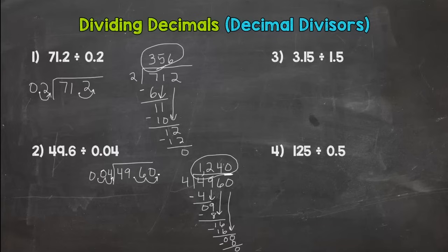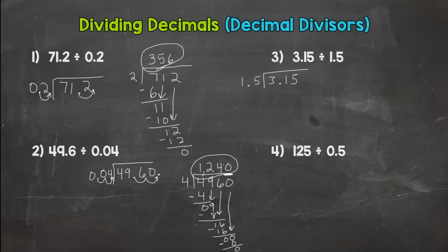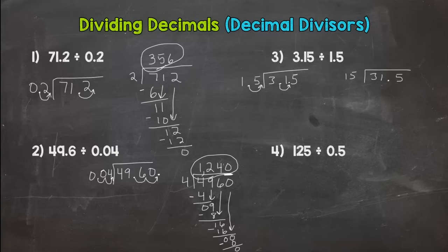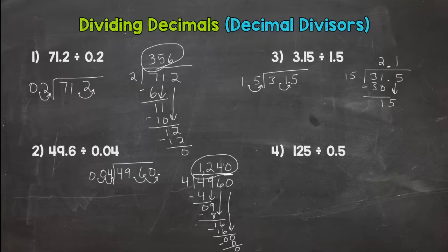Number three: we have 1 and five tenths as our divisor and 3 and fifteen hundredths as our dividend. Is our divisor whole? No — it's in between 1 and 2; it has a whole number part but it's not an exact whole number. So we need to multiply by a power of ten. We move the decimal once, which is like multiplying by ten. Do the same thing to the inside. Now my divisor is 15, and my decimal is in between the 1 and the 5. Is my divisor now whole? Yes — so I bring that decimal straight up. Thirty-one divided by 15 is 2. Two times 15 is 30. Subtract, I get 1. Bring down the 5. Fifteen divided by 15 is 1. One times 15 is 15. Subtract, I get zero. My quotient is 2 and one tenth.